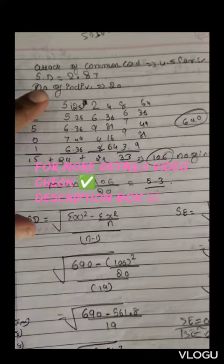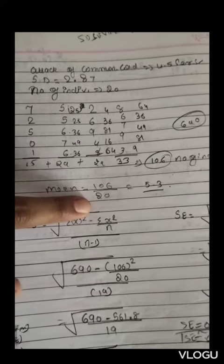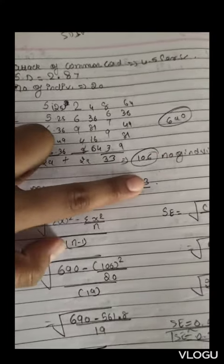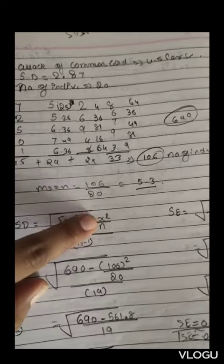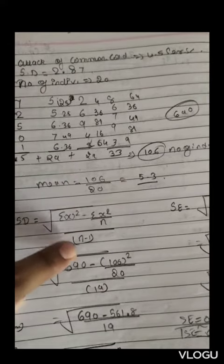For the mean, total number of observations divided by number of observations equals 5.3. For standard deviation, I am using this formula: square root of (sigma x squared minus (sigma x)² divided by n) divided by (n minus 1).